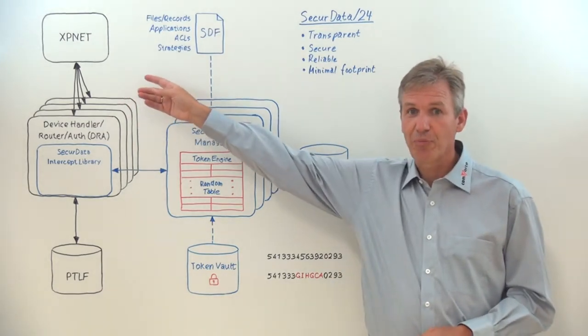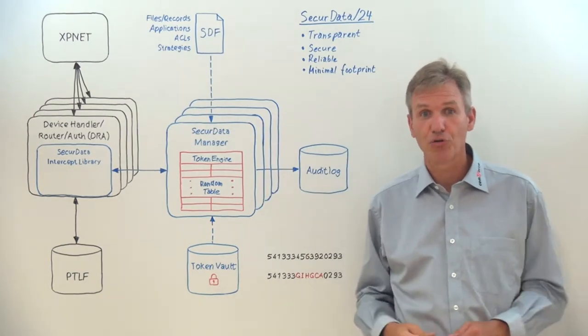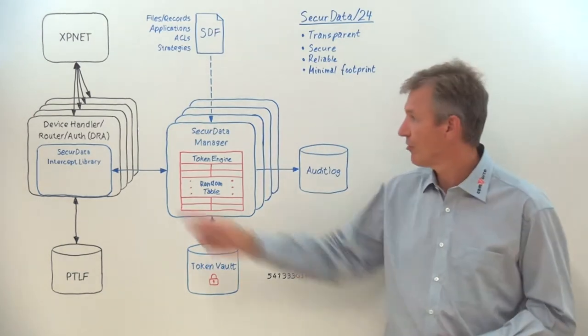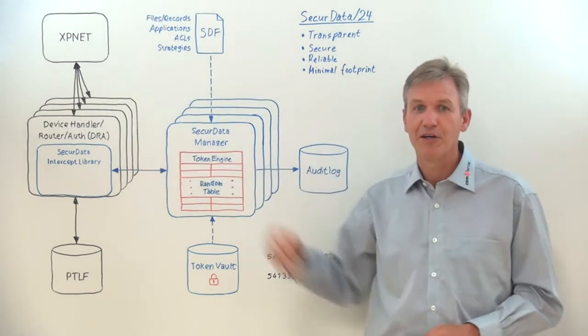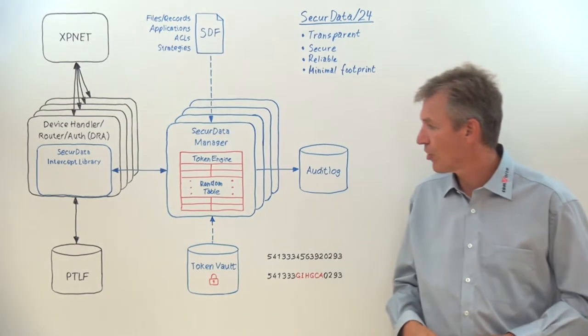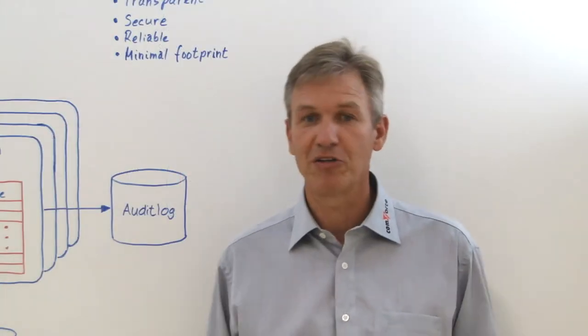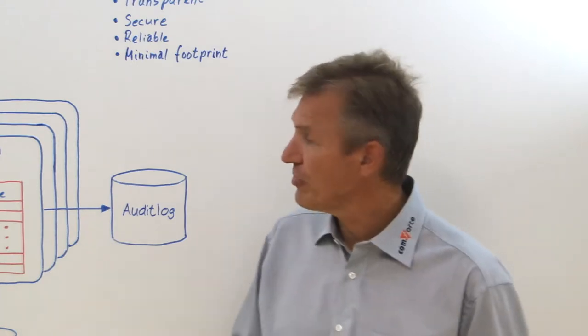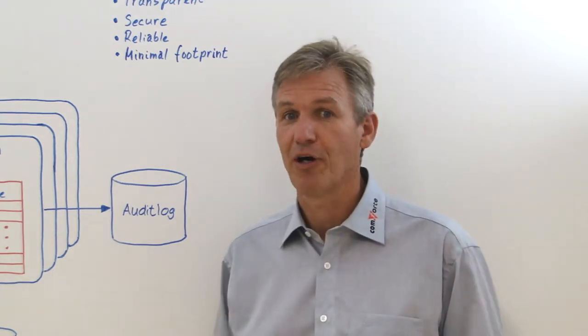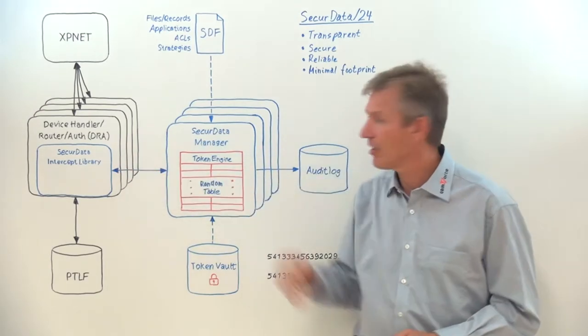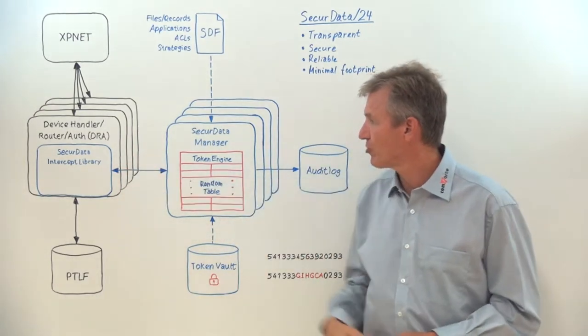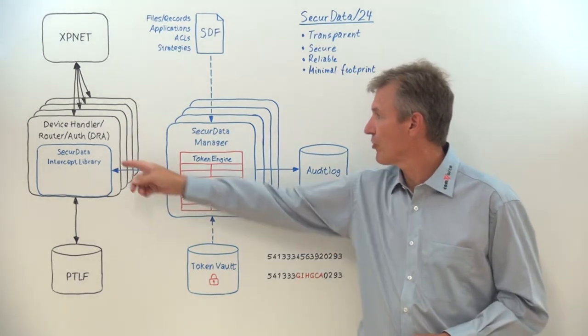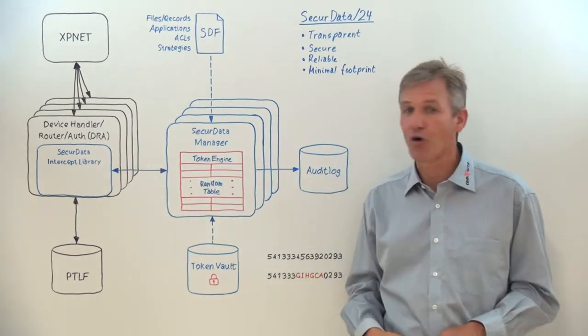XPNet is the process that manages the flow of messages through the various handlers. The DeviceHandlerRouterAuth process, the DRA, is the one that actually writes the transaction log records into the PTLF. Now SecureData24 is integrated with Base24 using the SecureDataIntercept library. And this library is bound to the Base24 programs including the DeviceHandlerRouterAuth process.